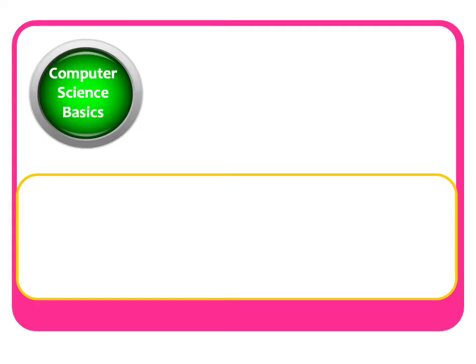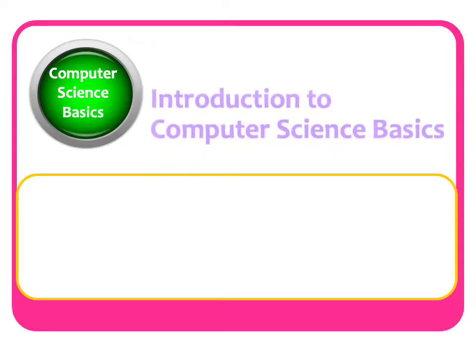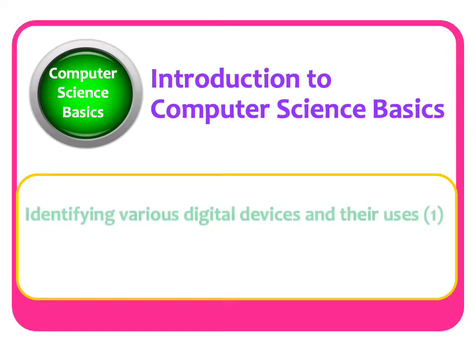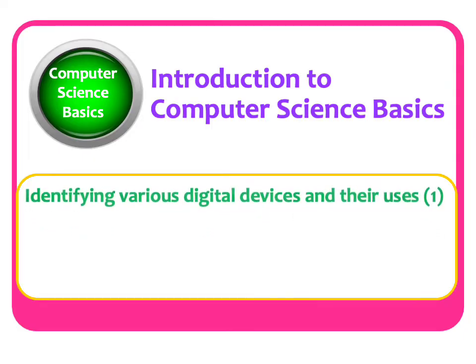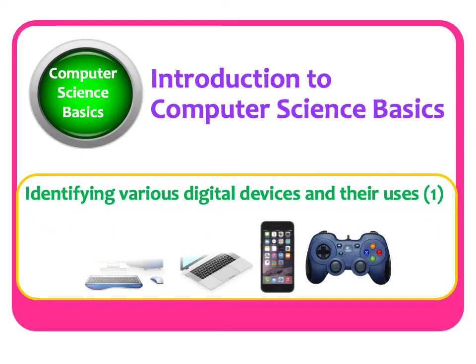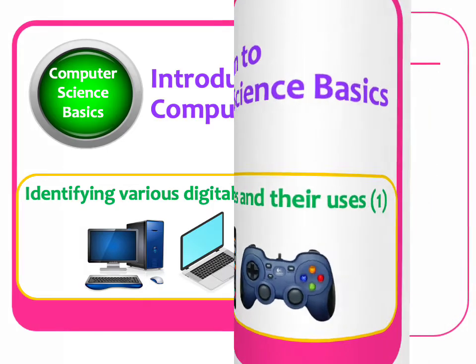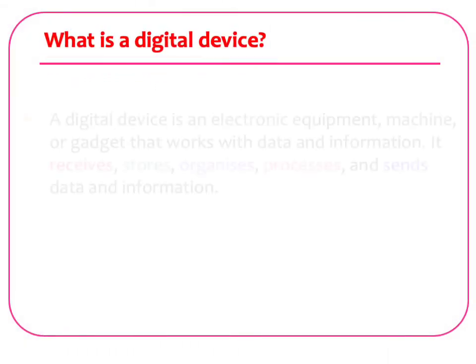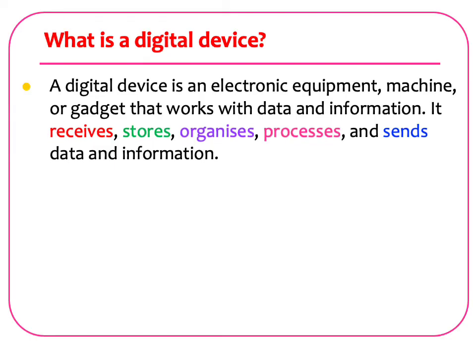We present the basics of computer science. In this lesson, we will identify various digital devices and their uses. What is a digital device? A digital device is an electronic equipment, machine, or gadget that works with data and information.